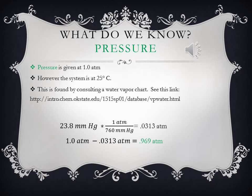Pressure was given to us at 1.0 atm. However, the system is at 25 degrees Celsius. We need to find what the pressure is at this new temperature. This is done by consulting a water vapor chart. If we look at the chart, we find that at 25 degrees Celsius, the pressure is equal to 23.8 millimeters mercury.